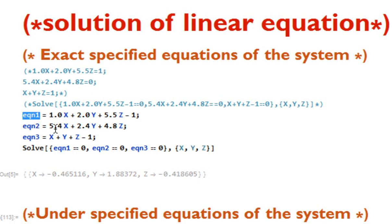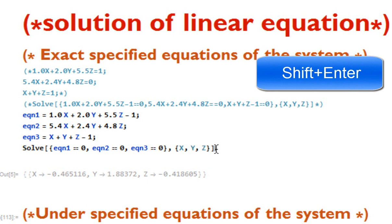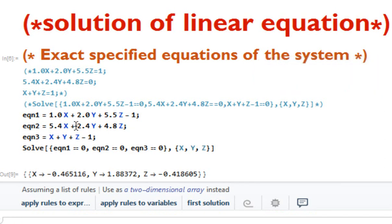Here I specified all the equations in variables: equation one, equation two, and equation three. Then simply write Solve with square brackets, then curly braces containing equation one equals equals zero, equation two equals equals zero, equation three equals equals zero, followed by a comma separating the set of equations from the set of variables. Press Shift and Enter to run and you will see similar results as the previous method.